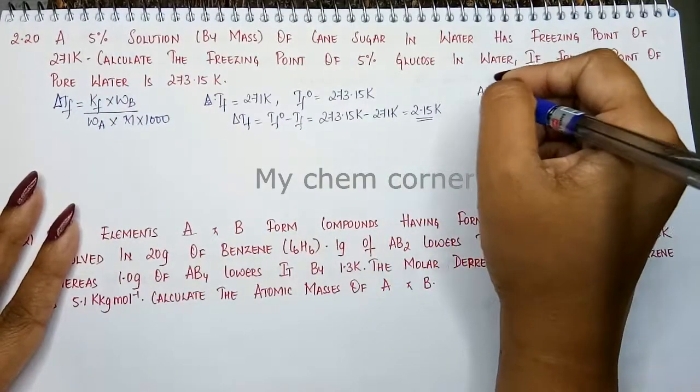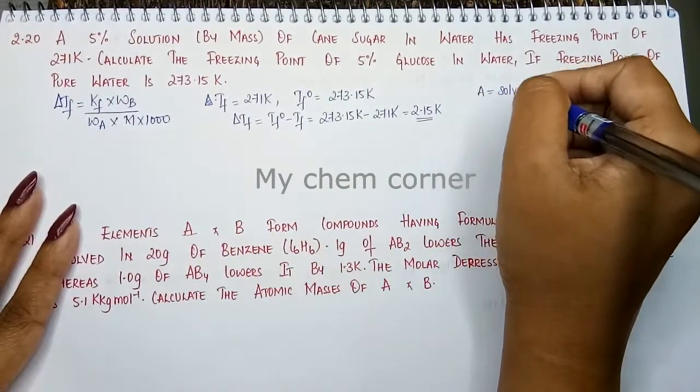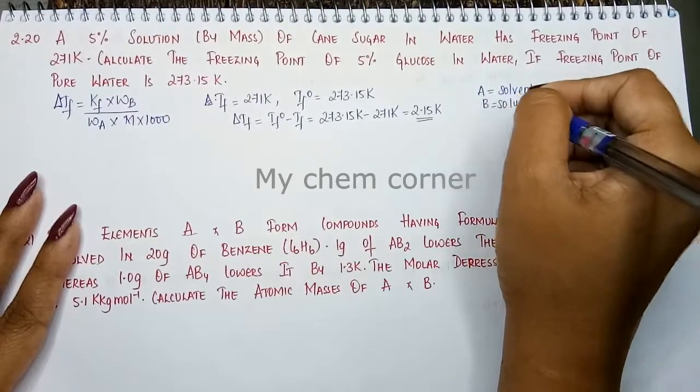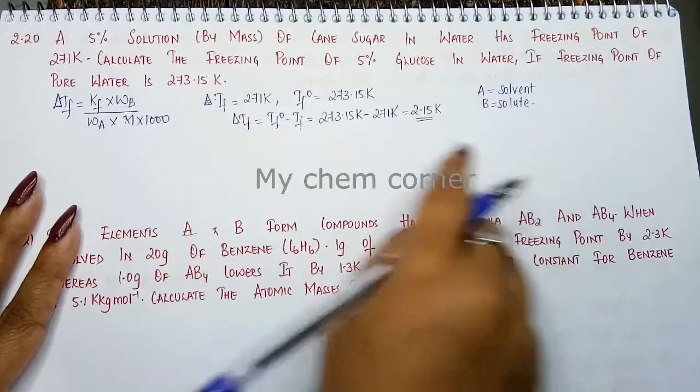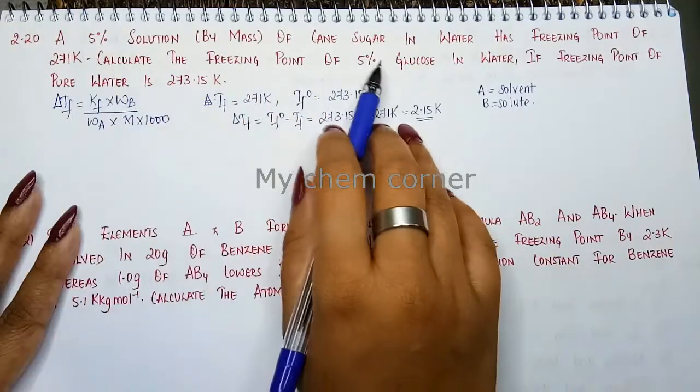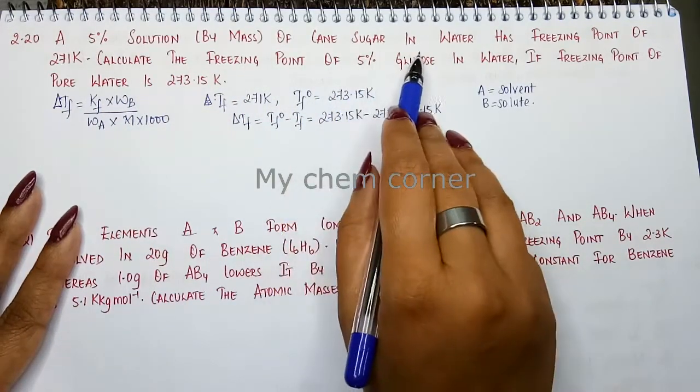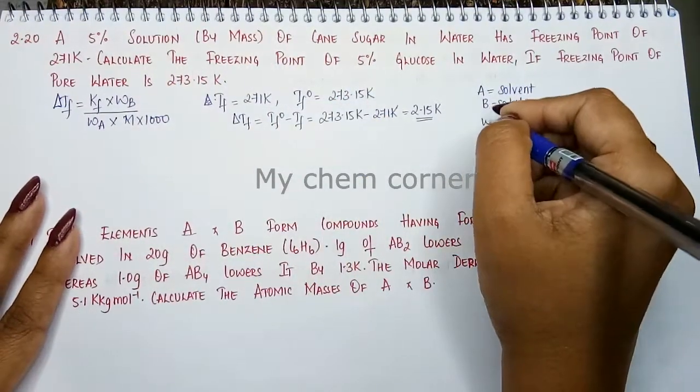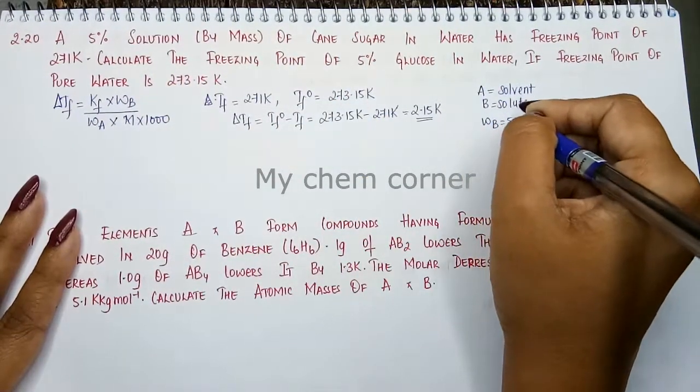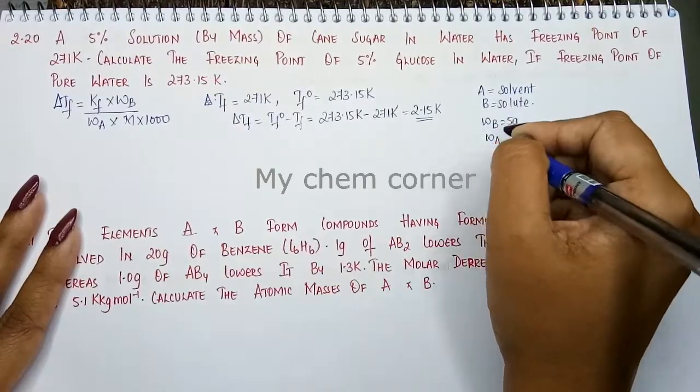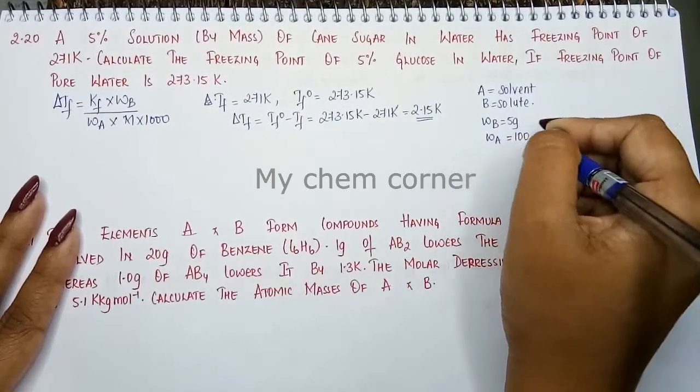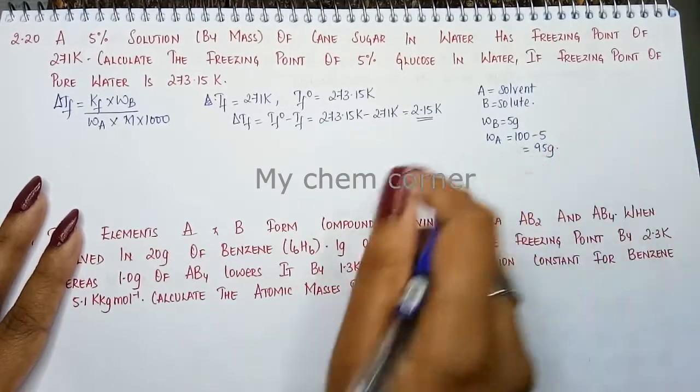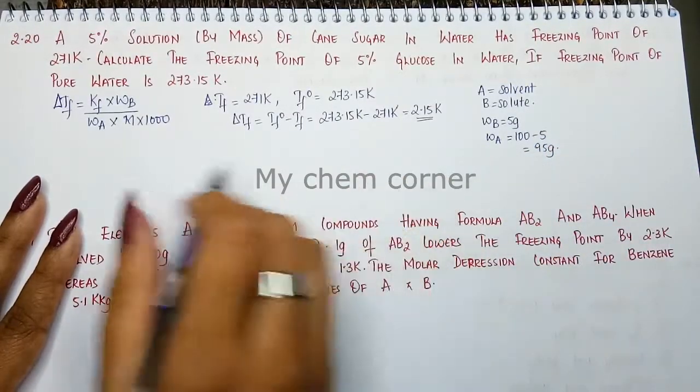Now let's see what values we get. We can say that we have 5% of the solution by mass. So when you say 5% of solution by mass, weight of the solute is 5 grams and weight of the solvent is going to be, since its percentage is 100 minus 5, that will give 95 grams.